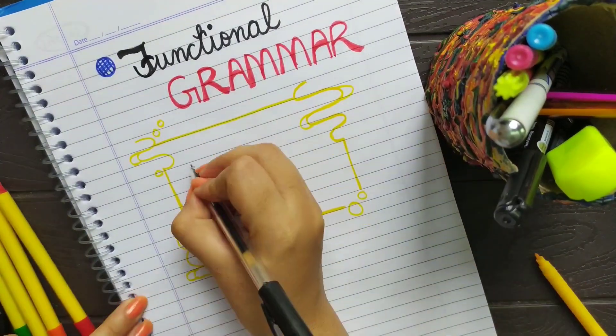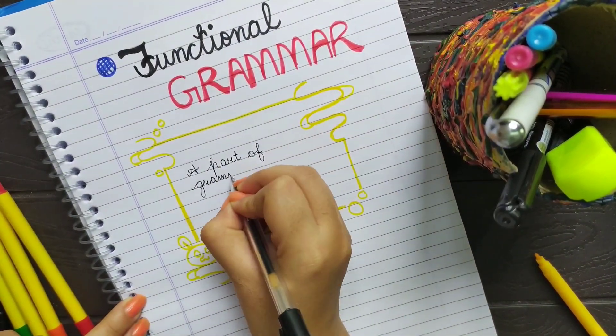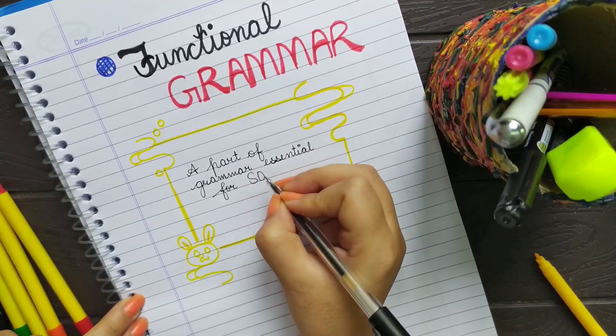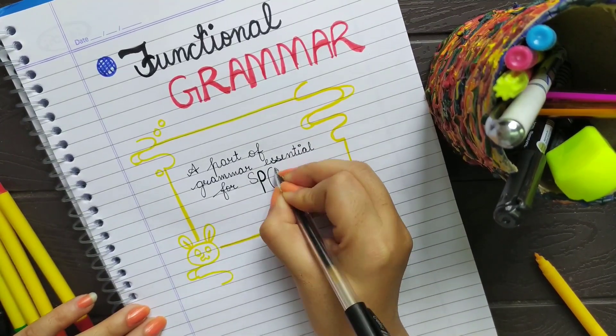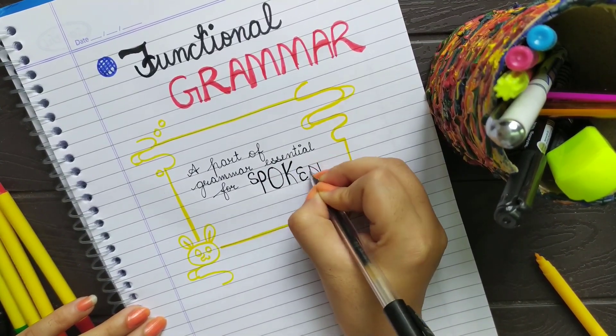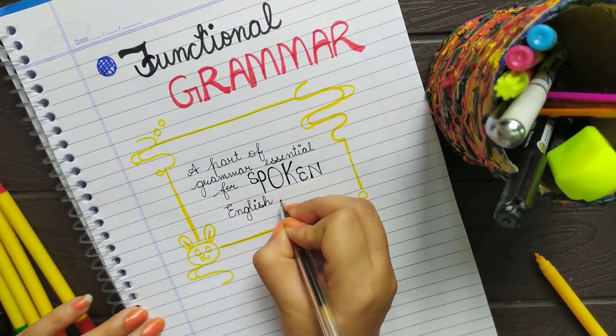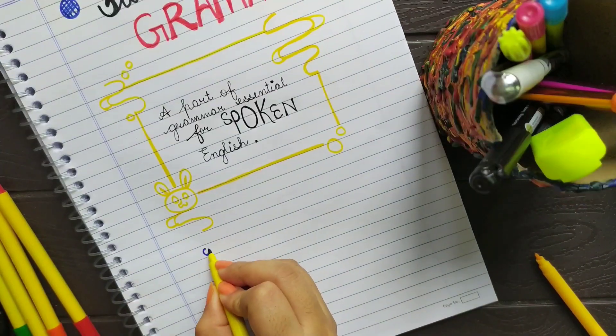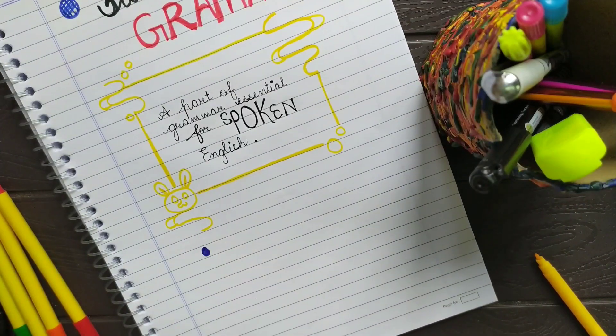Functional grammar is that part of grammar which is essential to improve your spoken English because it makes us well known with necessary grammatical rules required for speaking correct English. Now let's understand through an example.